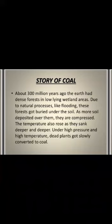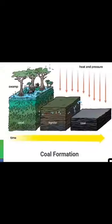I will tell you a short story of how coal is formed. About 300 million years ago, the earth had dense forests in low-lying wetland areas. Due to natural processes like flooding, these forests got buried under the soil. As more soil deposited over them, they were compressed. Due to high temperature and pressure, dead plants got slowly converted into coal. The dead remains in the swamps were first converted into peat, then lignite, and finally into coal.